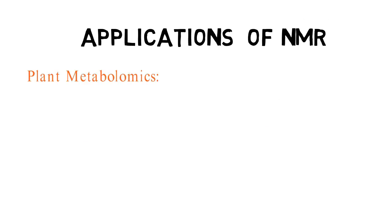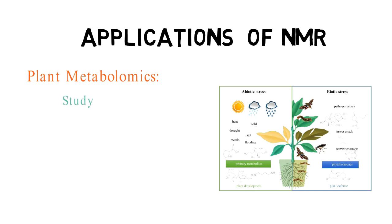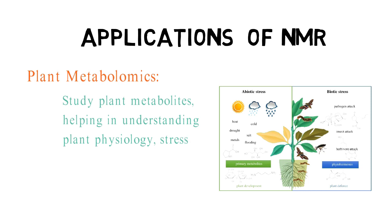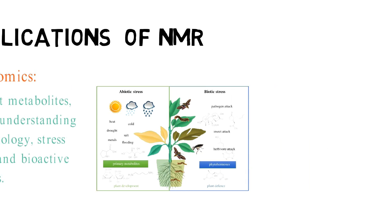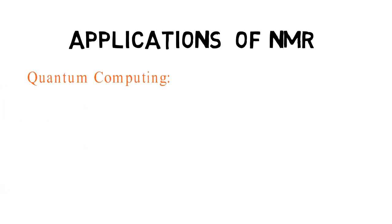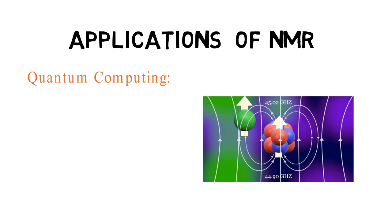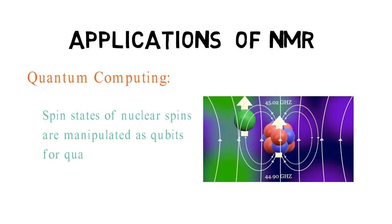NMR is applied in plant science to study plant metabolites, helping to understand plant physiology, stress responses, and bioactive compounds. NMR is also utilized in quantum computing experiments, where the spin states of nuclear spins are manipulated as qubits for quantum information processing.